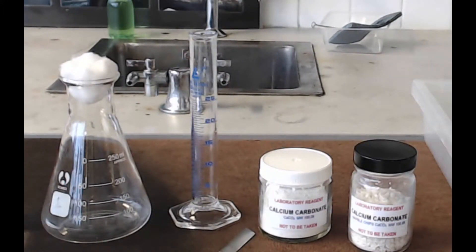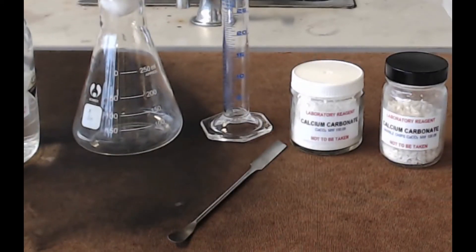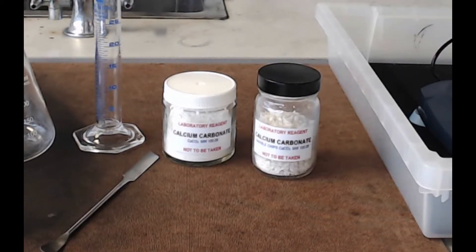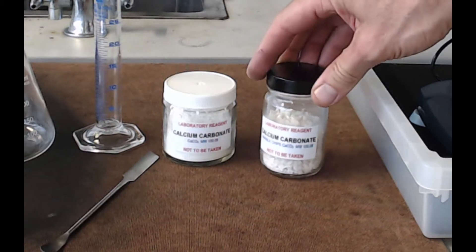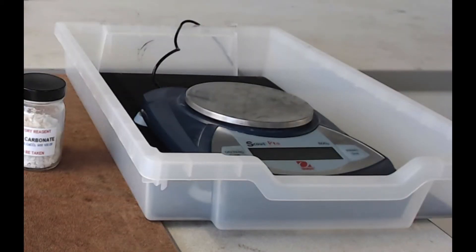this one's a 25ml one but you could use any size really, a spatula for dispensing your calcium carbonate, 2 forms of calcium carbonate, so a powdered form and another form which we call marble chips which is these kind of small stones I suppose you could describe them as, and you're going to need a balance to weigh out your calcium carbonate.